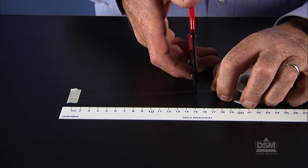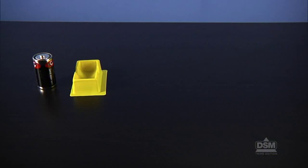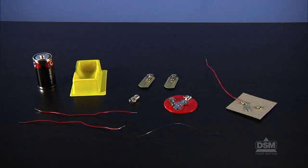Cut a 15 centimeter piece of number 32 nichrome wire for each team of two. Each team of two will need a battery, a battery holder, two electrical clips, two 15 centimeter insulated copper wires, one bulb, one bulb holder, a 15 centimeter piece of number 32 nichrome wire, and a switch assembly.